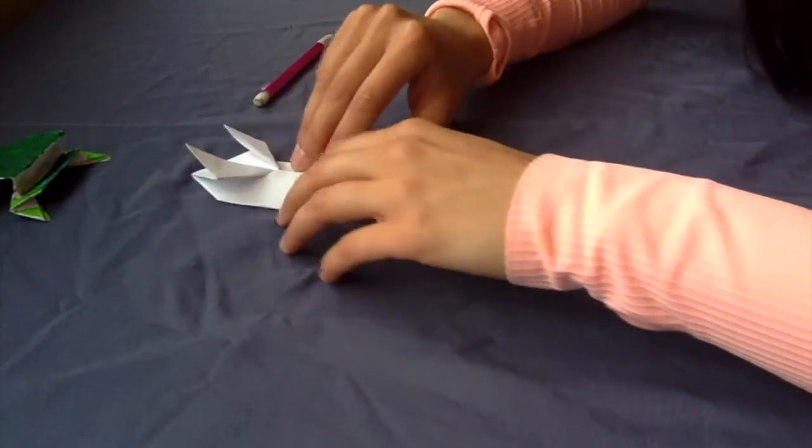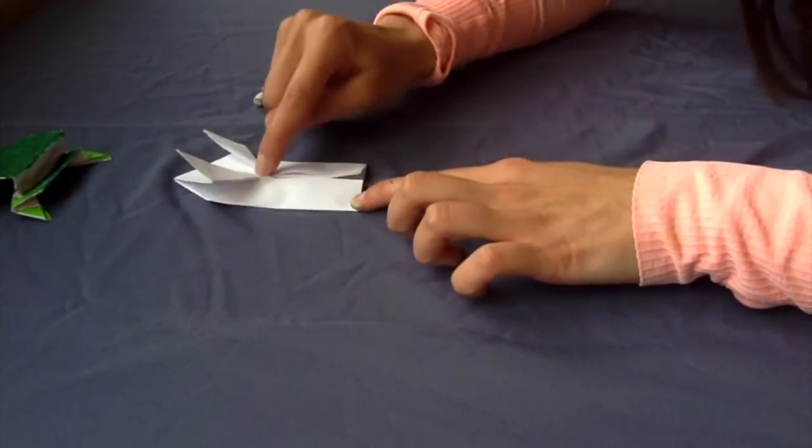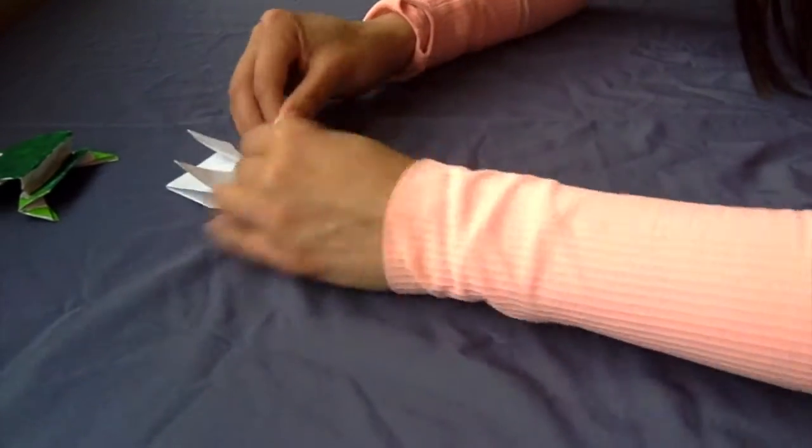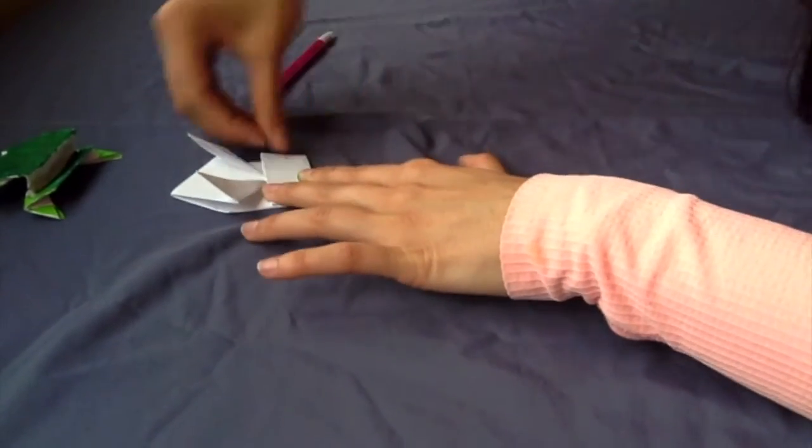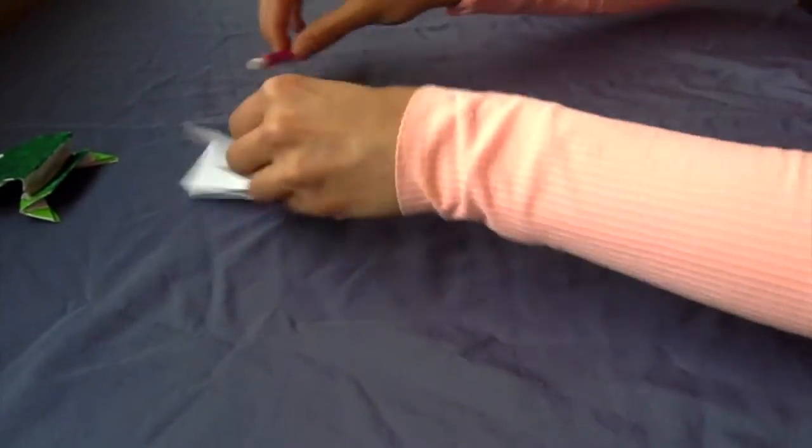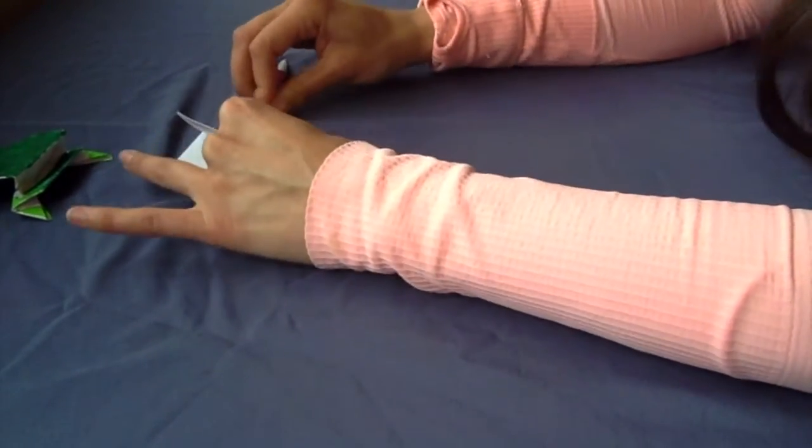So it should look something like this. Next you're going to take this here and fold it up to here. This is the part where it gets a little tricky to fold because the paper is getting thicker, but just stick with it. Using something to press the folds down will really help here.